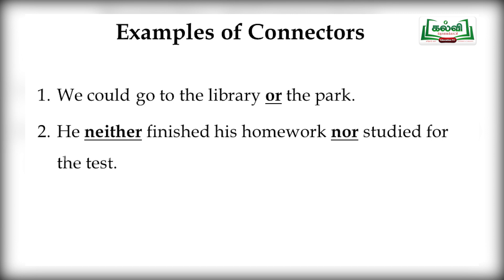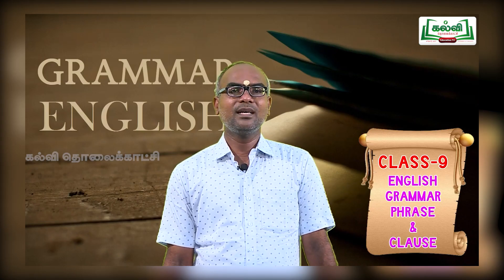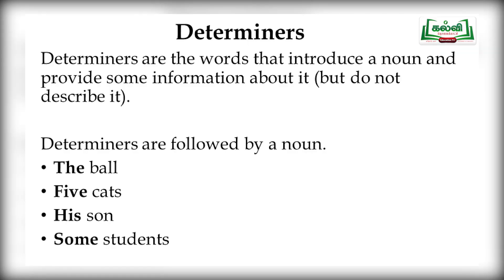Now we will move on to the next topic: determiners. What is a determiner? Determiners are words that introduce a noun and provide some information about it, but do not describe it. Determiners are followed by a noun. Examples: the ball, five cats, his son, some students. Here, 'the,' 'five,' 'his,' and 'some' are the determiners. The work of a determiner is to introduce the noun, not to describe it.